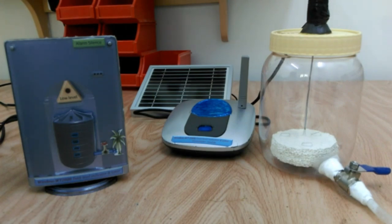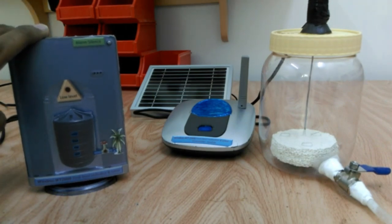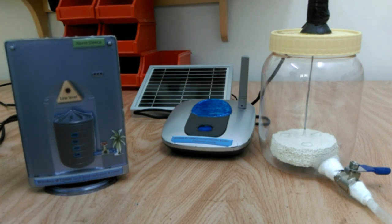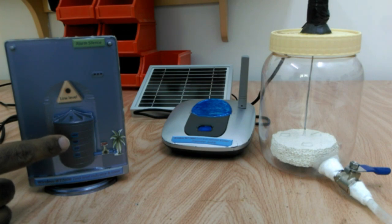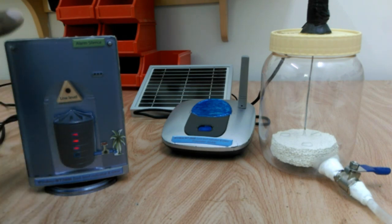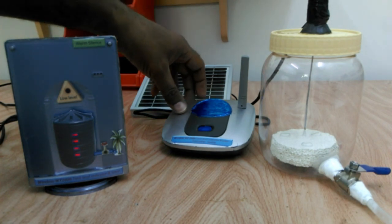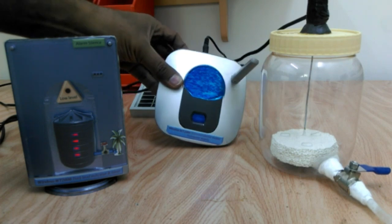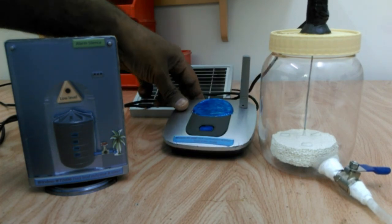I will switch on the display unit. As you can see, all the LEDs are flashing. This indicates that there is no communication between the display unit and the transmitter right now because the transmitter is off. So I will switch on the transmitter unit.